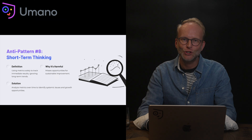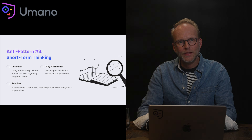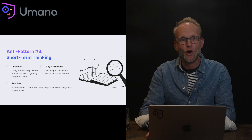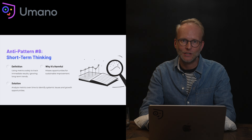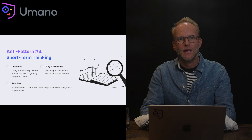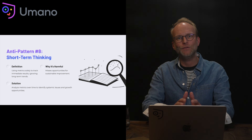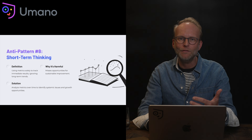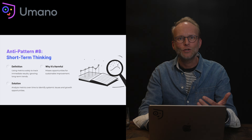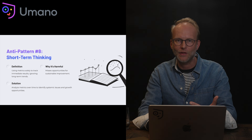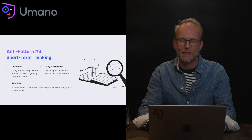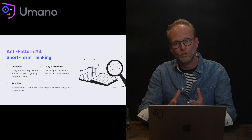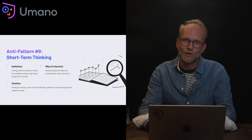Anti-pattern eight: short-term thinking. This is about taking a myopic or very narrow time-frame lens on what a metric is telling you. It's unhelpful because it doesn't give you a broader trend or pattern that may be occurring. Ideally you're looking for patterns in the signals you're observing to identify sustained improvement and health in the outcome you're seeking. The solution is to look more broadly and identify the pattern across a longer horizon.